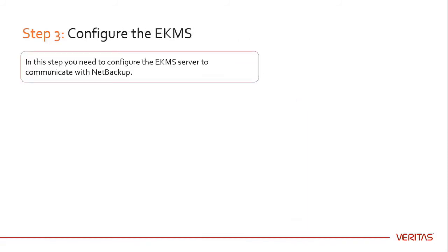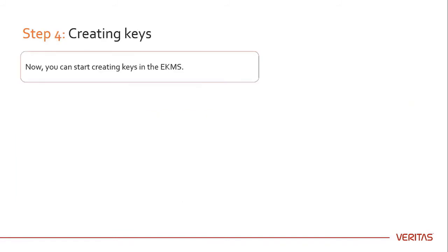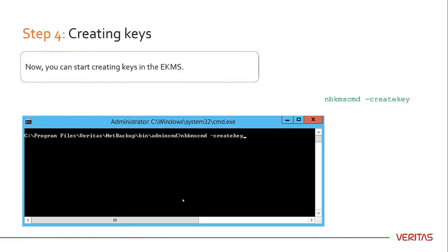Now you can configure the KMS. To configure the external KMS server, you need to specify the name and port of the external KMS server. You can then start creating keys in the external KMS. Run this command in the command prompt.